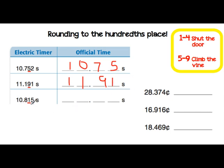Looking at our last one, the underlined hundredths place is a 1, and to the right of that is a 5. That fits under the rule 5 through 9 — climb the vine. So we're going to increase the underlined number by 1. Our answer is 10 and 82 hundredths of a second.